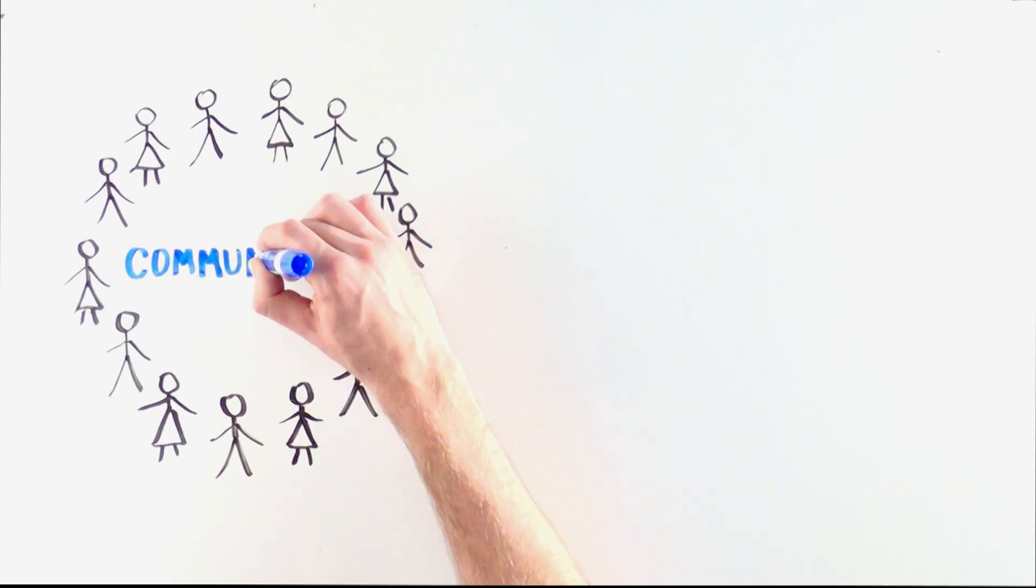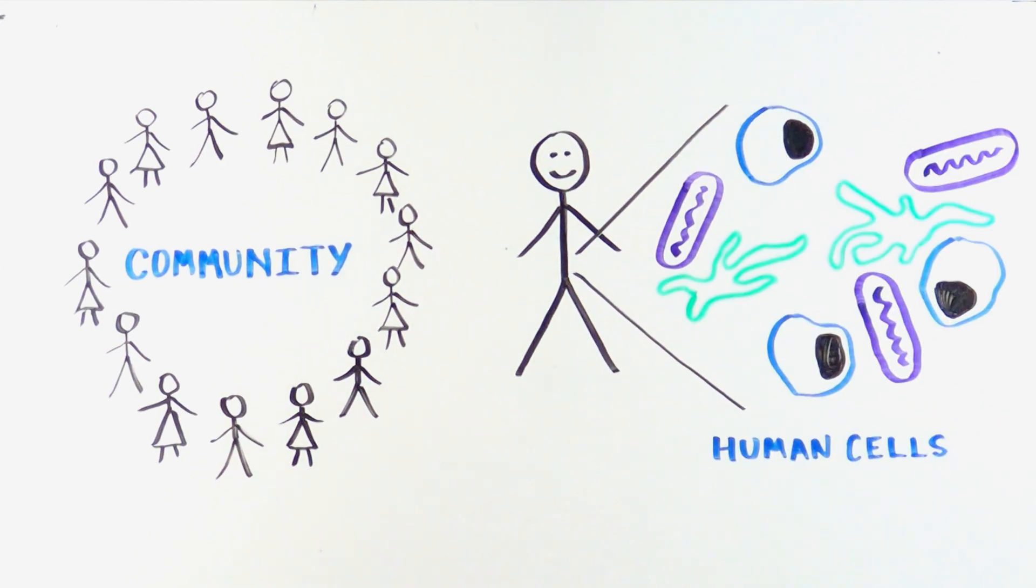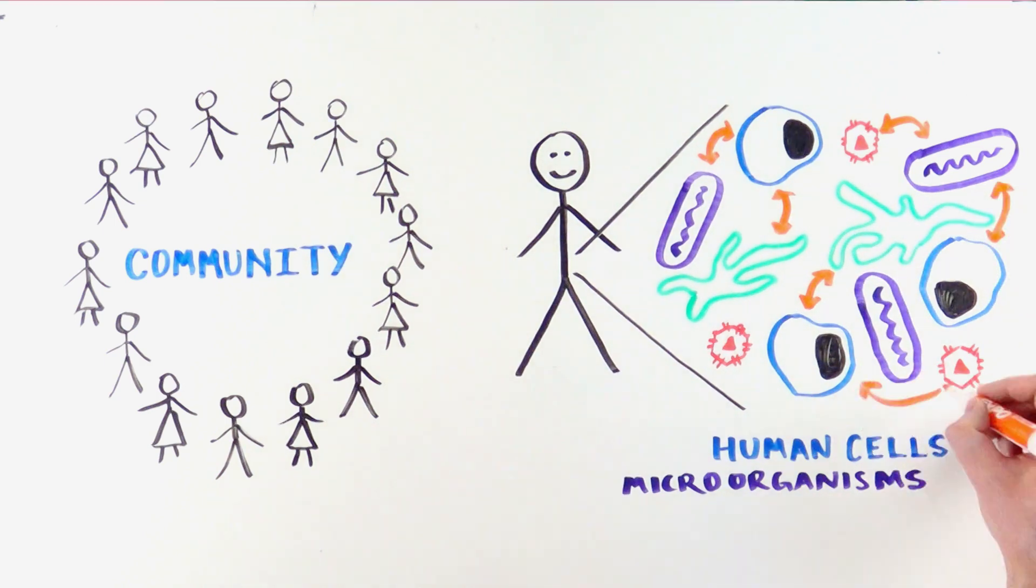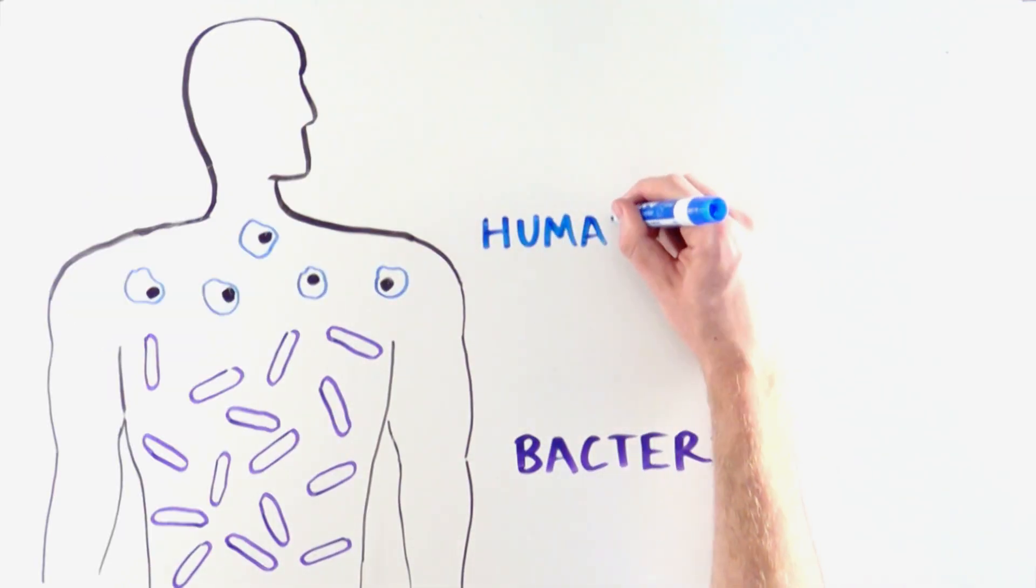As humans, we live and draw resources from communities of people. Interestingly, our bodies also house their own complex communities of human cells and microorganisms that work together. In fact, our bodies are made up of more bacterial cells than human cells.